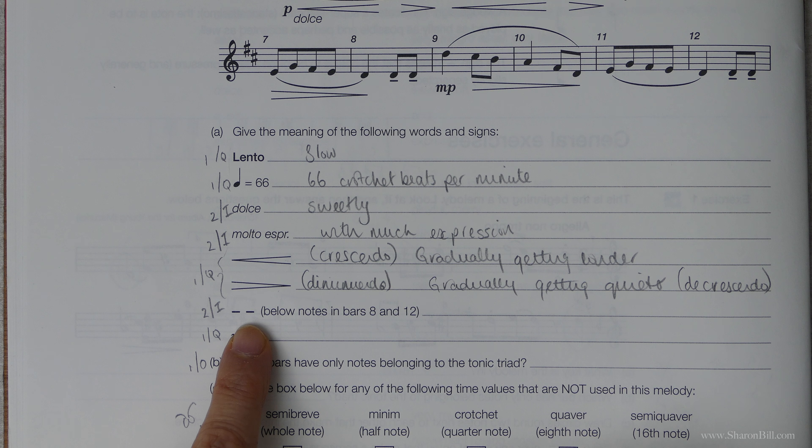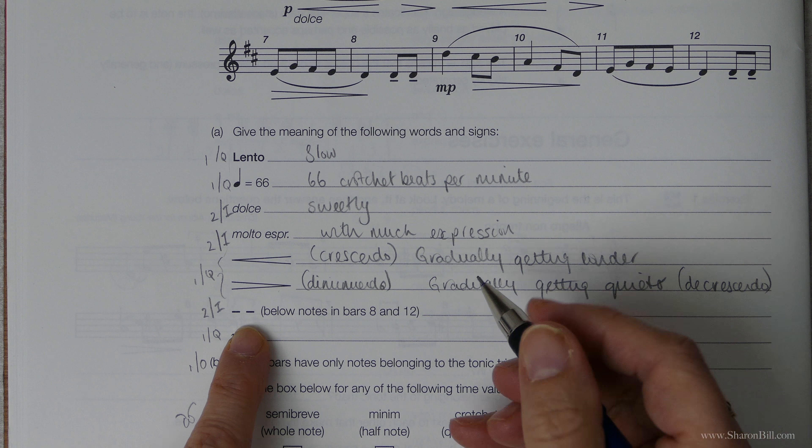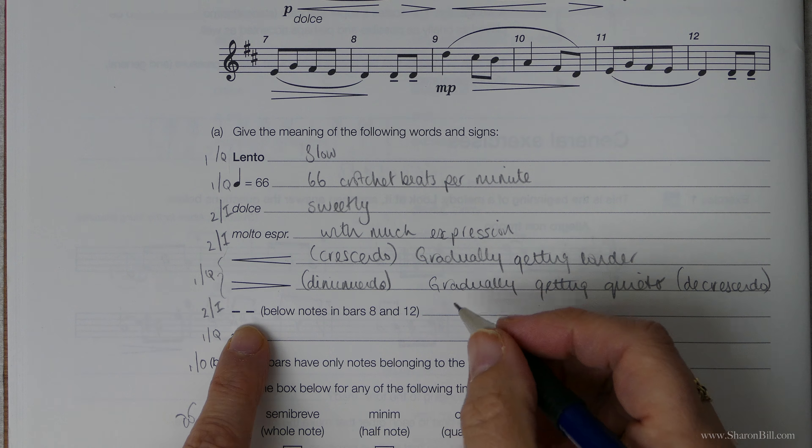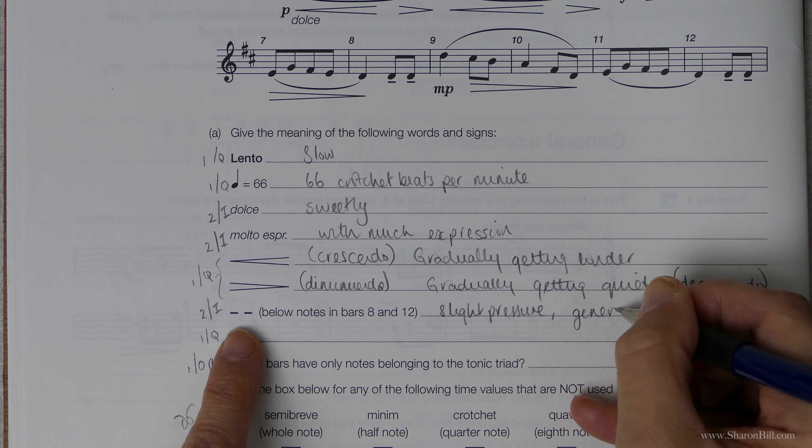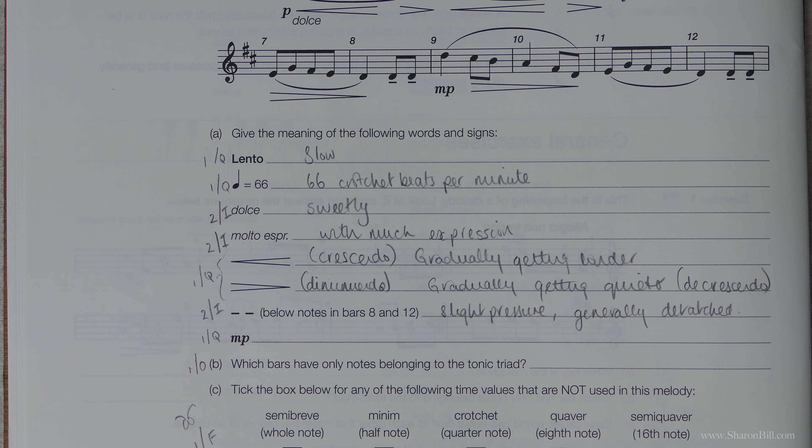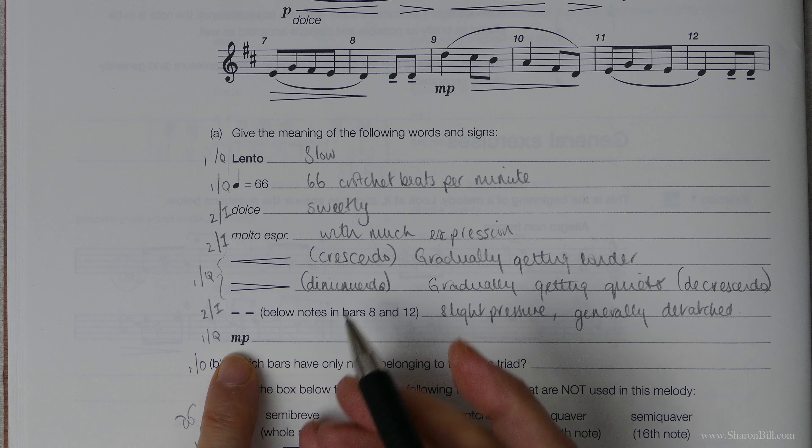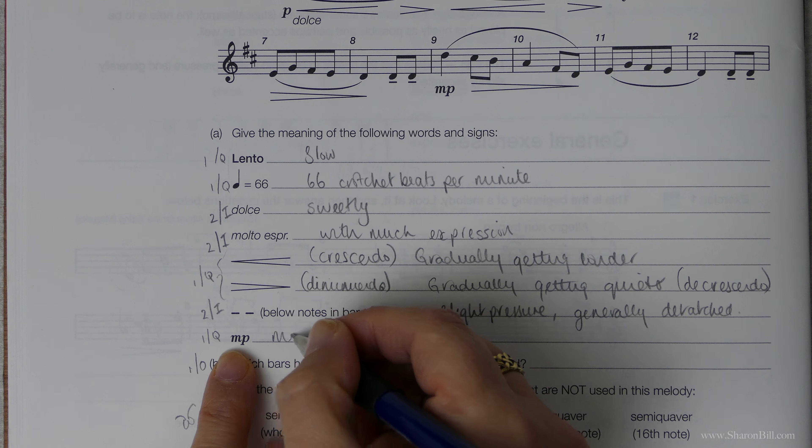These notes here are what I refer to as the tenuto marks and what they actually mean is it's a slight pressure, certainly not an accent and generally detached as well. They're separated. This next one, MP, it's actually short for mezzo piano, which mezzo literally means middle or we'd say moderately, and piano is quiet or I guess you could say soft.